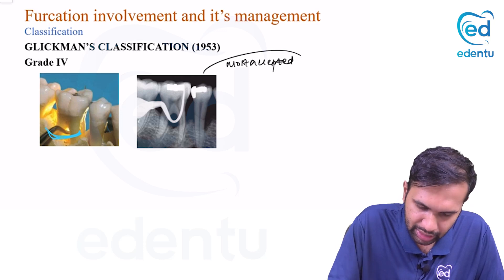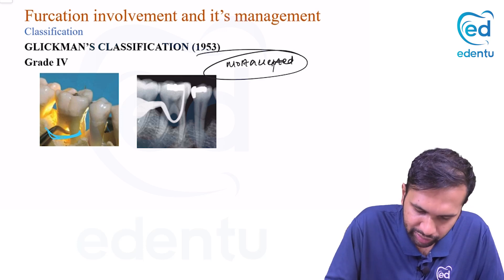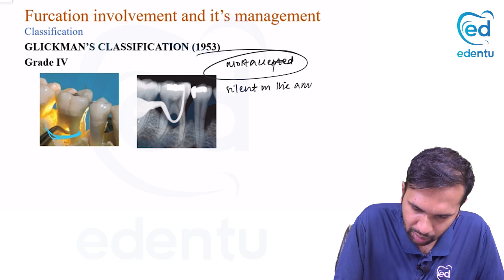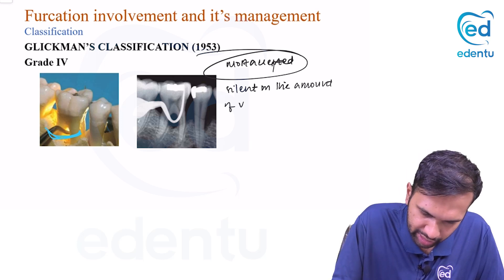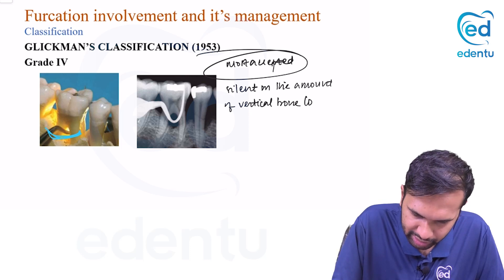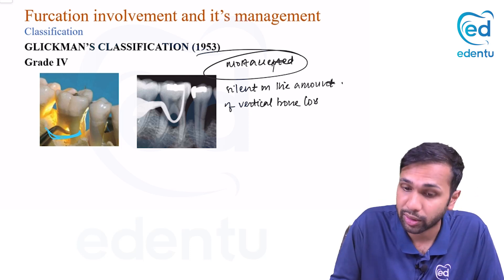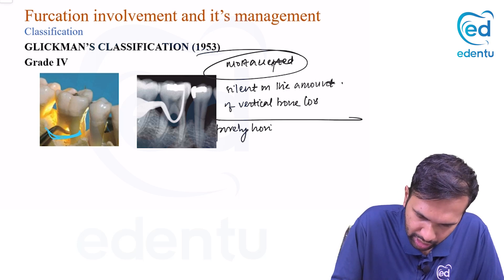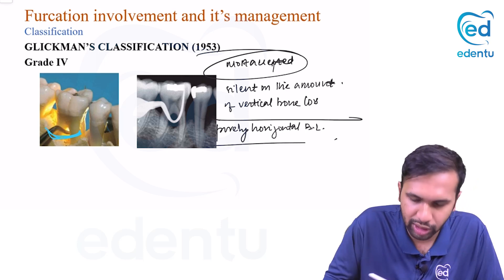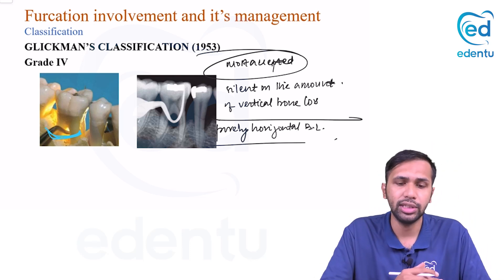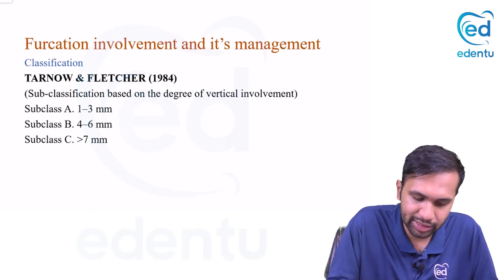Even though Glickman's classification is the most accepted, it was silent on the amount of vertical bone loss — it was purely based on the extent of horizontal bone loss. This was its main drawback.